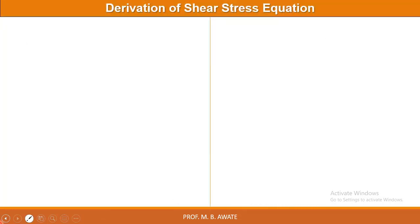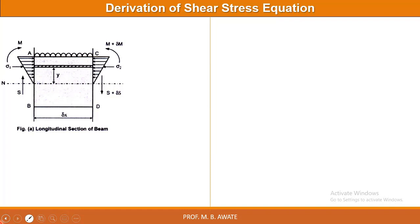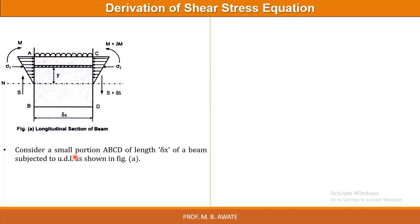Now we will see the derivation of the shear stress equation. For that reason, we have considered a figure which shows the longitudinal section of the beam — the section along its length. Consider a small portion ABCD of length delta x of a beam subjected to UDL as shown in figure A. This is a small portion of the beam ABCD; there is an entire beam of longer length, but we have selected only a small portion having length delta x. This beam is subjected to a UDL.